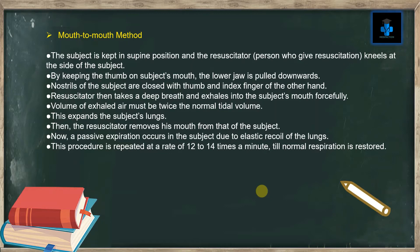The volume of exhaled air must be twice the normal tidal volume. This expands the subject's lungs. Then the resuscitator removes the mouth from that of the subject. A passive expiration now occurs in the subject due to the elastic recoil of the lungs. This procedure is repeated at a rate of 12 to 14 times a minute until normal respiration is restored.